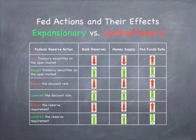If the Federal Reserve bought treasury securities on the open market, lowered the discount rate, or lowered the reserve requirement, the bank reserves would increase, the money supply would increase, and the federal funds rate would decrease.